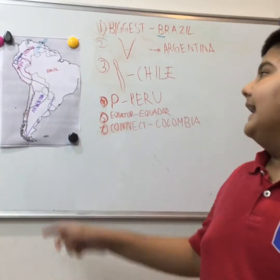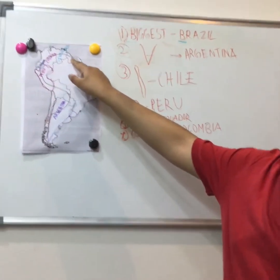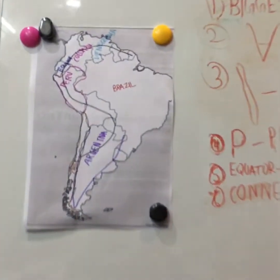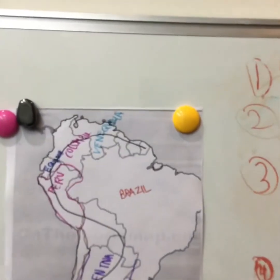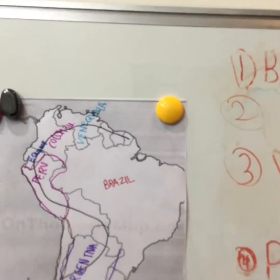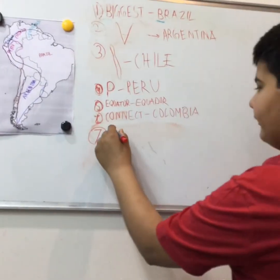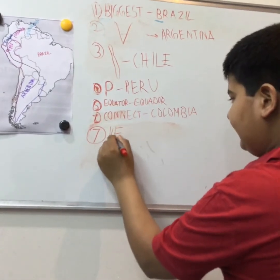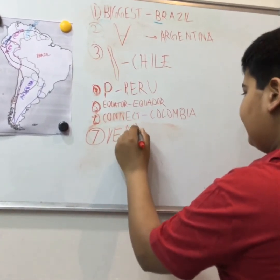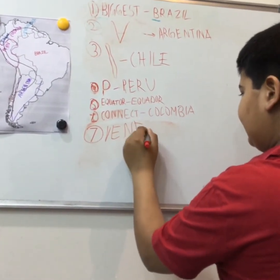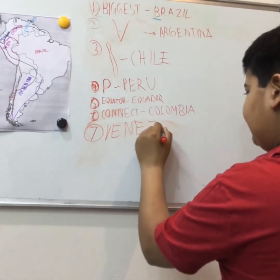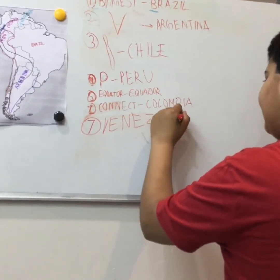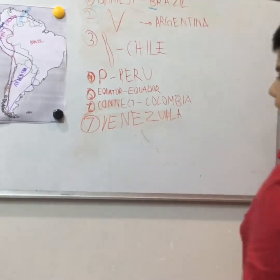The next country is Venezuela, which is located to the right of Colombia.